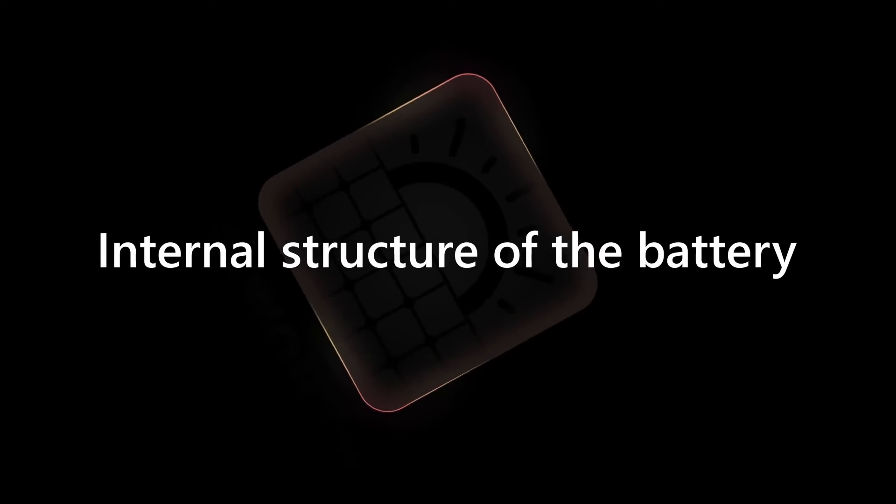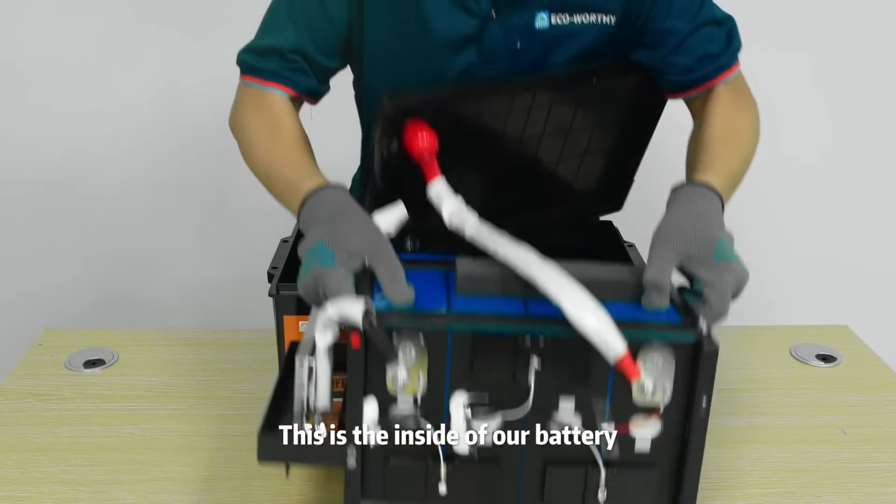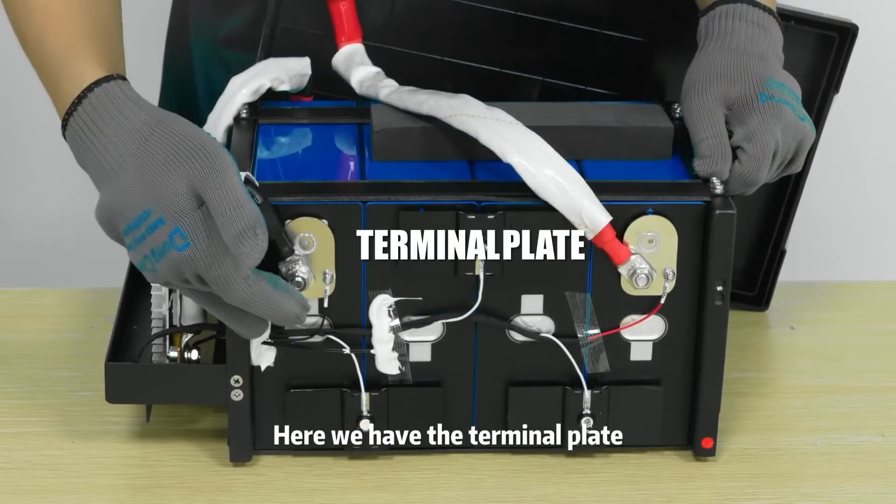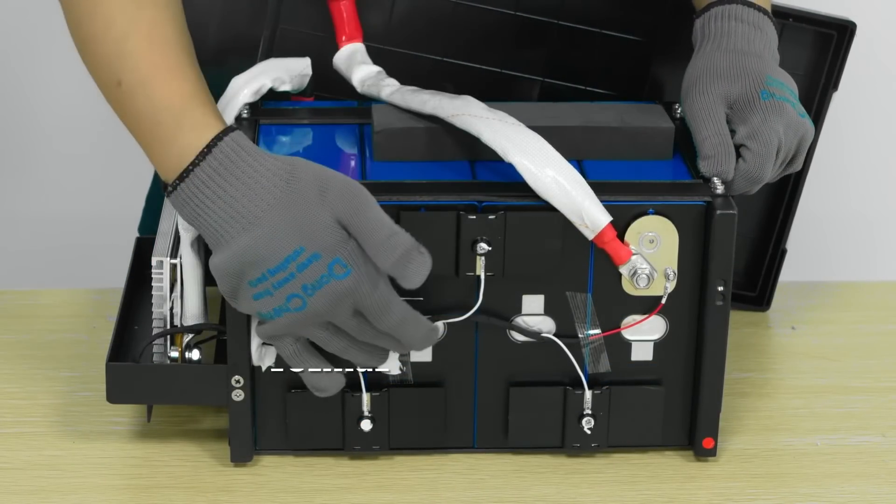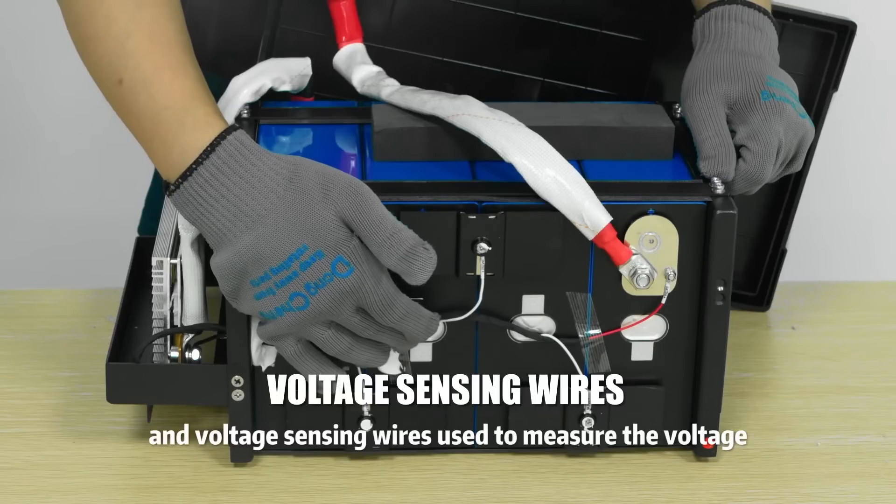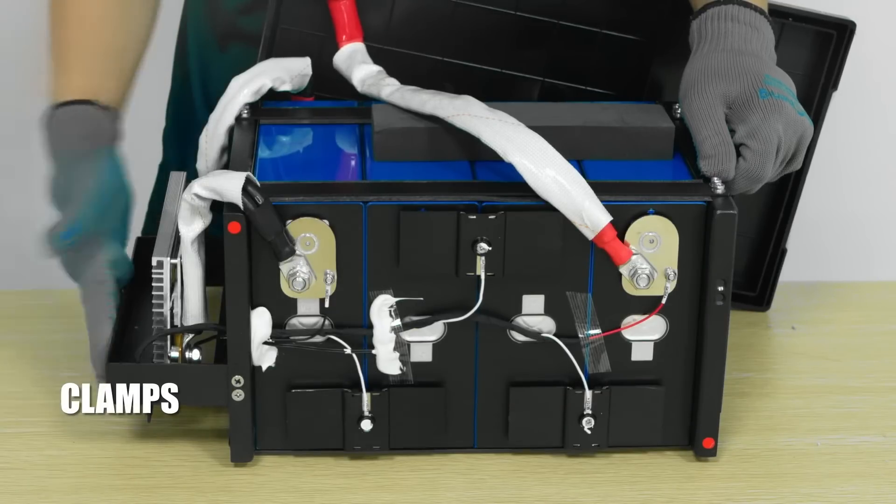Internal structure of the battery. This is the inside of our battery. We have the terminal plate, battery cells, protection board, power wires, and voltage sensing wires used to measure the voltage. All these wires are insulated, and there are also clamps.